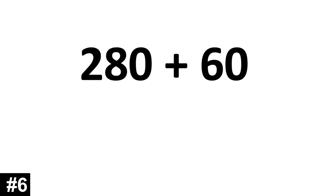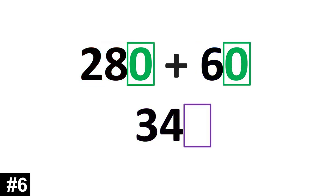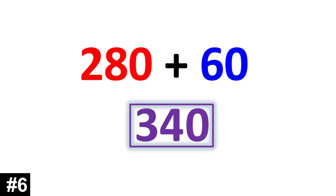280 plus 60. 280 has 28 tens. We add that to the 6 tens from 60, and we get 34 tens. We add the zeros. 340.